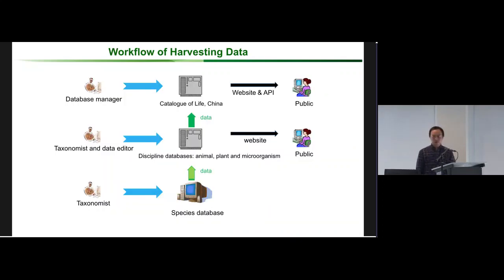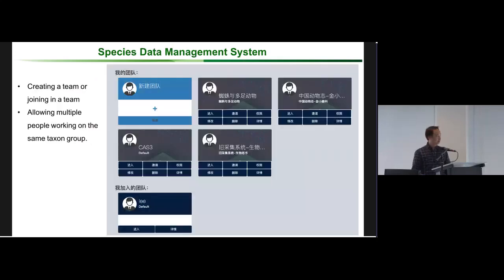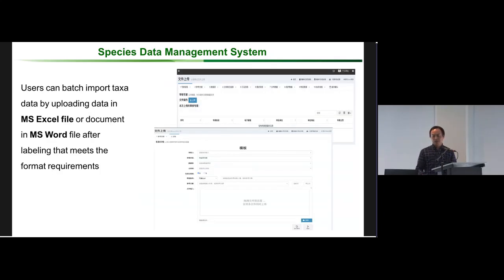This is the workflow for harvesting data from many single-species databases into a bigger catalogue, including animals, plants, and microorganisms. Then we build the Catalogue of Life China annually to release through the website and standalone app to the public. We have a species data management system that allows people to work together on different taxonomic groups.